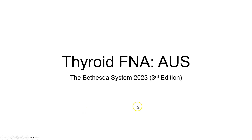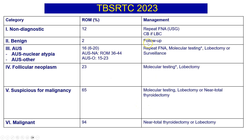Hello, we are going to look at the atypia of undetermined significance or AUS category in thyroid FNAs, according to the Bethesda System for Reporting Thyroid Cytopathology, the 2023 or third edition. Before we go into detail on AUS, let's have a very quick overview of the Bethesda System.